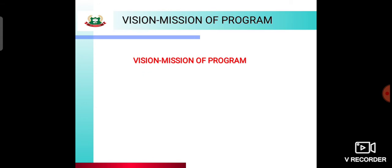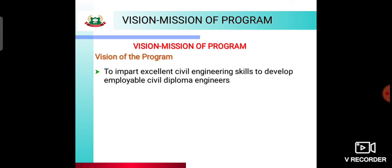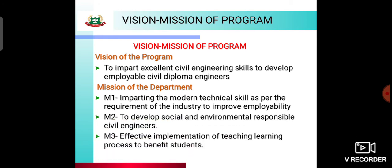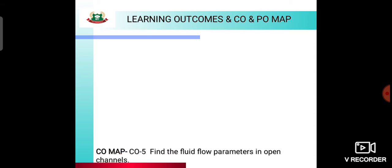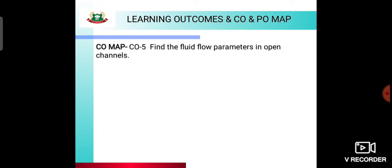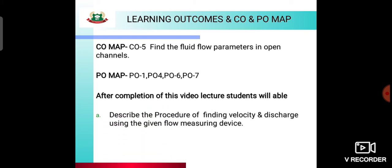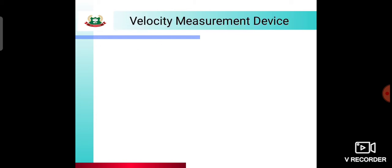We cover the vision and mission of the program, followed by the learning outcomes, course outcomes, and program outcomes. The course outcome of this unit is to find the fluid flow parameters in open channels, mapped to PO1, PO4, PO6, and PO7. The learning outcome of this topic is to describe the procedure of finding velocity and discharge using given flow measuring devices.